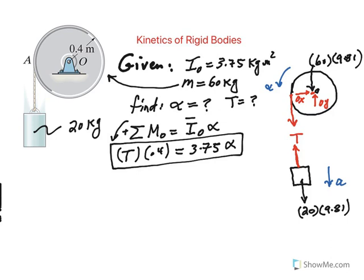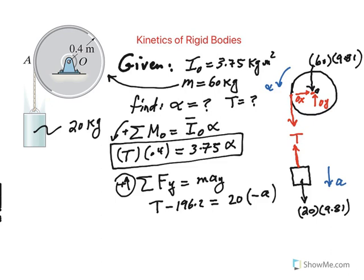And then the other equation is coming from the block. One thing we have to be careful here is sum of forces in the y direction equal to m times a_y. Whatever direction we pick applies to both sides of the equation. So we have tension going up, 196.2 going down, which is 20 times 9.81. But we have mass, 20 kilograms, times acceleration. But that's downwards. We have to put negative A here. Otherwise, things are not going to work out. So T minus 196.2 equals minus 20A.